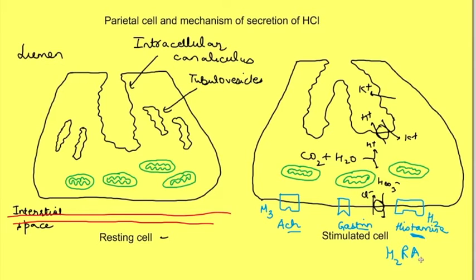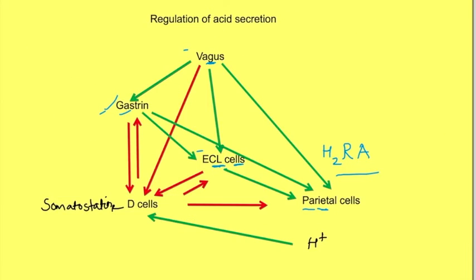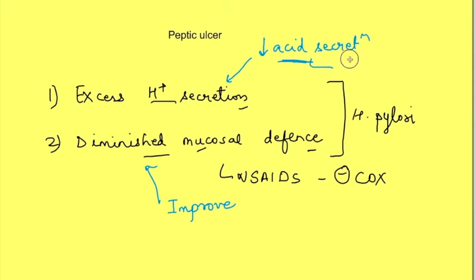That's why histamine receptor antagonists are not the most important drugs to reduce HCL secretion. The most important drugs for inhibiting HCL secretion are hydrogen potassium ATPase inhibitors. The hydrogen potassium ATPase pump secretes H+ ions. Drugs which block these pumps are known as PPIs—proton pump inhibitors. So drugs which decrease HCL secretion are H2 receptor antagonists and proton pump inhibitors.